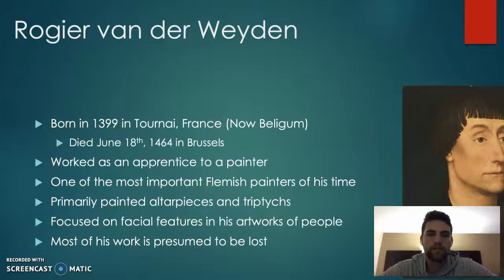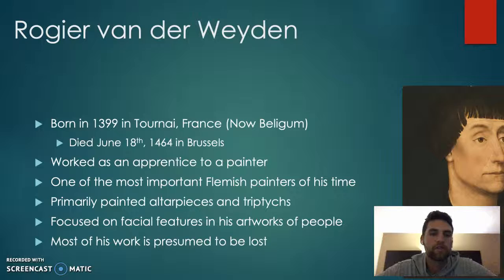Rogier van der Weyden was born in 1399 in Tournai, France, which is actually now Belgium. He died June 18, 1464 in Brussels.